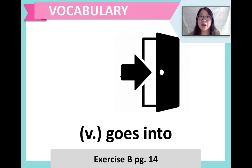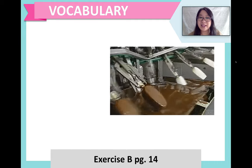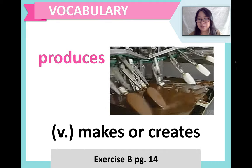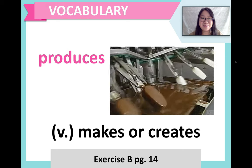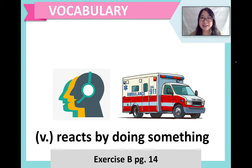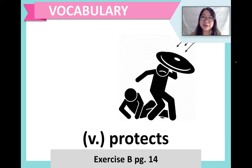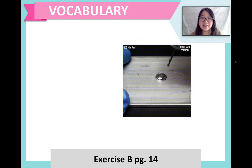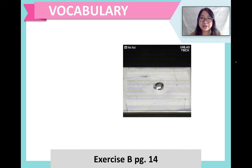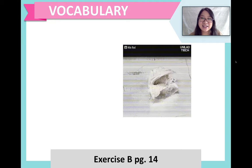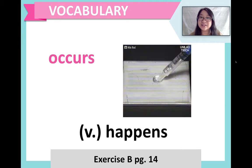Next, when we go into a place, we enter. We can enter a room, a country, or a certain group. Now look at this factory — they are making something. This factory produces ice cream, or popsicles. Next, to react by doing something: when we call emergency services, the emergency service responds by sending someone to help. For example, if you call 911, they will respond by sending an ambulance. Next, to protect someone or something is to defend. Now look at this video: liquid mercury is introduced to aluminum, and a chemical reaction occurs. Very interesting.